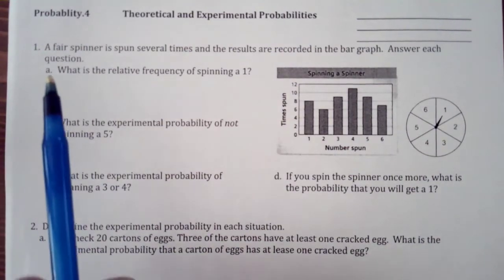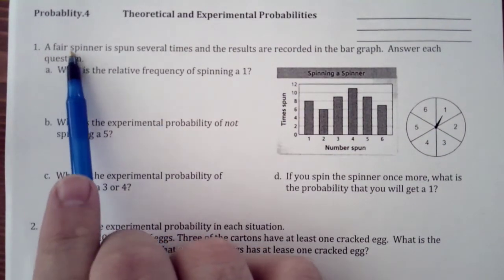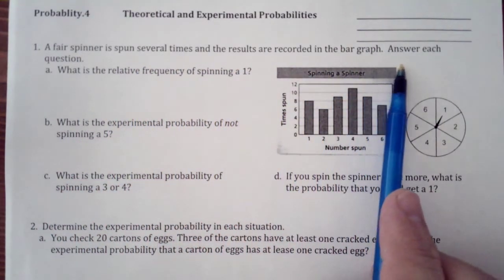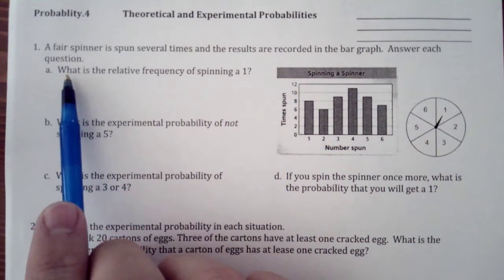First thing we need to do, looking at number 1: a fair spinner is spun several times and the results are recorded in the bar graph. Answer each question.